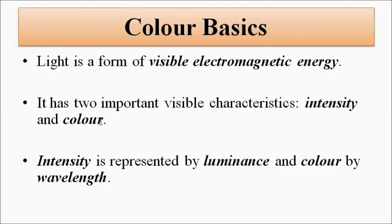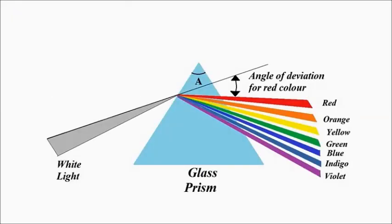Intensity we have already discussed — luminous intensity, luminance. Color is basically because objects absorb certain wavelengths of light radiation and emit certain radiation. It is because of those emitted radiations — the wavelength of the emitted radiation — that it gives specific color characteristics. We know that white light is made up of seven constituent colors. The prism experiment splits white light into seven constituent colors: violet, indigo, blue, green, yellow, orange, red.